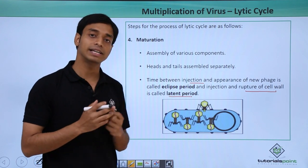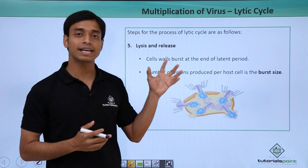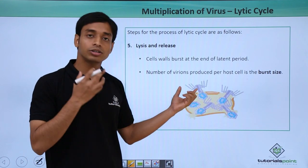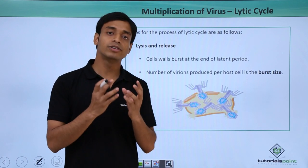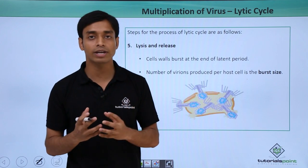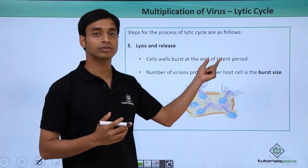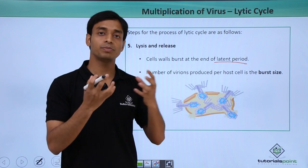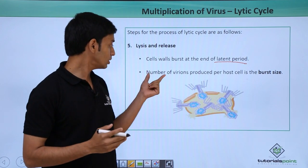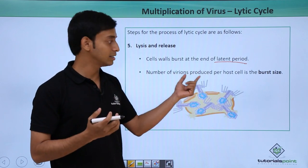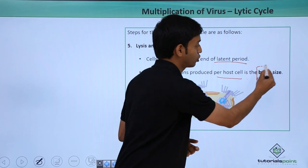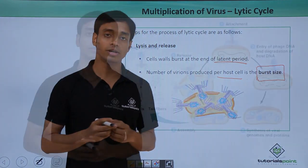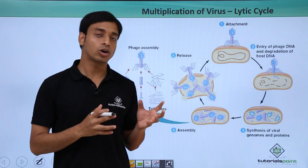The last step of the lytic cycle is lysis and release of virus particles. As the virus particles increase in number and reach a threshold value, the cell wall bursts open at the end of the latent period, and all the virus particles present inside the host organism are released. The number of virions or virus particles produced per host cell is given the term burst size.